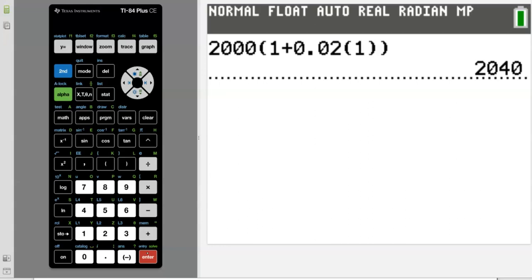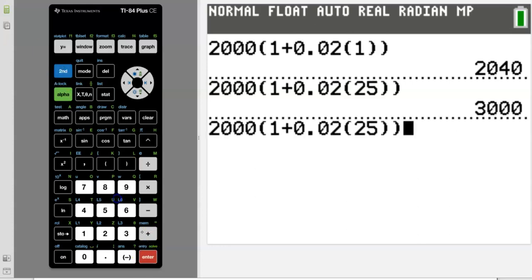I'm going to show you a trick. Because we have to do the exact same thing for 25 and 50 years, instead of typing all of that in again, I'm going to push second, enter, and it's going to pop back up. Then I can change that 1 to a 25. Push enter again. Second, enter, and then change my 25 to a 50. So in one year she'll have $2,040, in 25 years she'll have $3,000, and in 50 years she'll have $4,000.